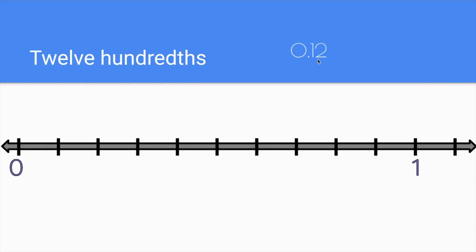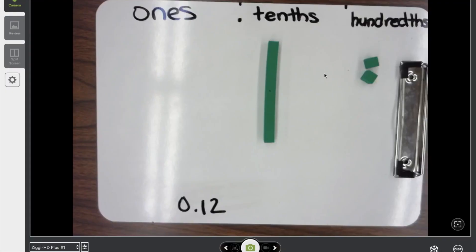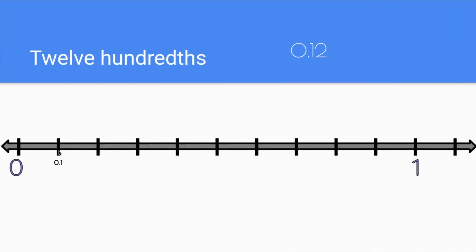So if this is what twelve-hundredths looks like, where is it on the number line? First, look at how many tenths we have — I see there's one tenth, and one tenth is right here. But this is more than one tenth, a little bit more. It's one tenth and then a little bit more, so we're going to go a little bit past one tenth. Here's twelve-hundredths, right here — not all the way to two-tenths, but just a little bit past one tenth.